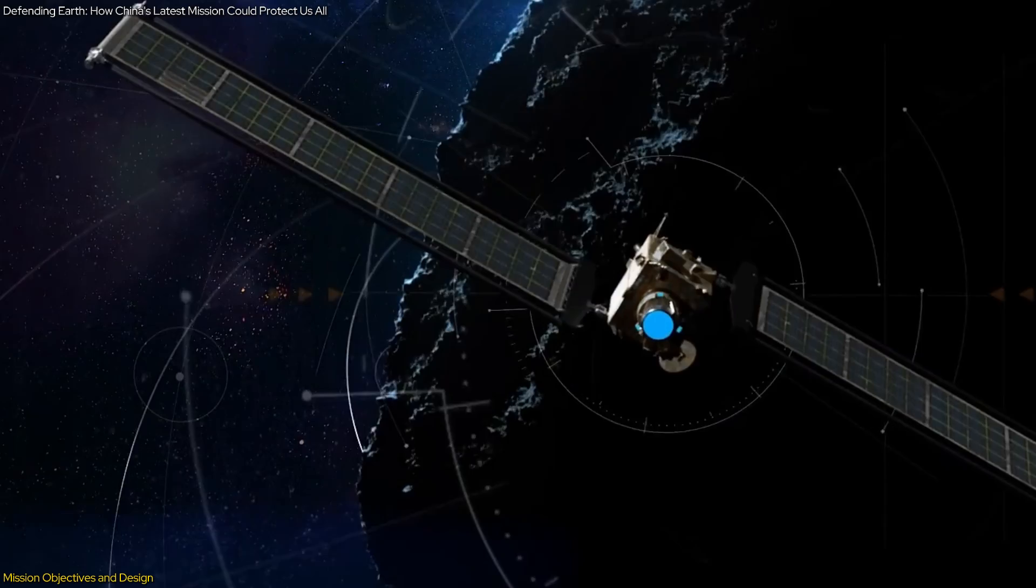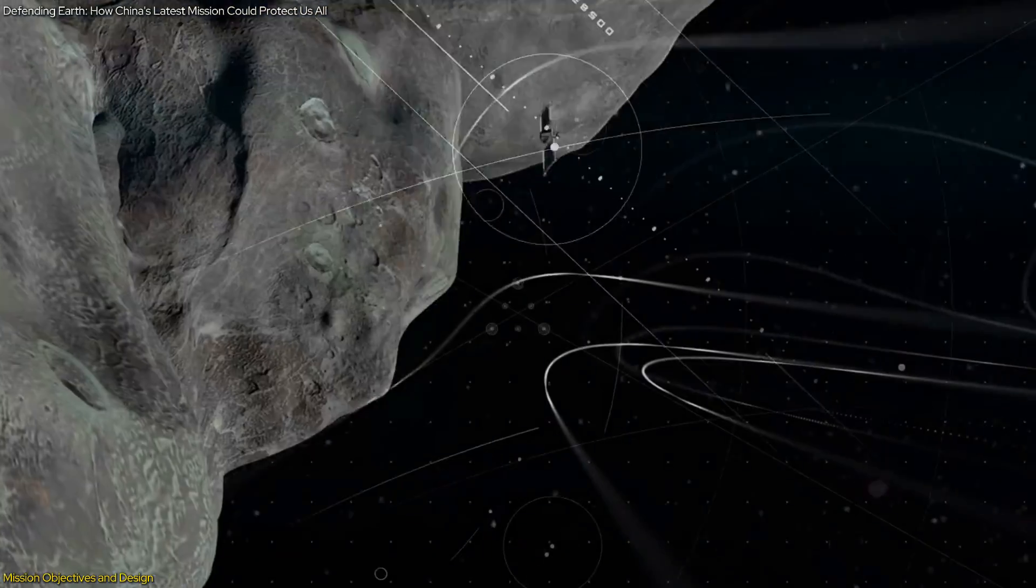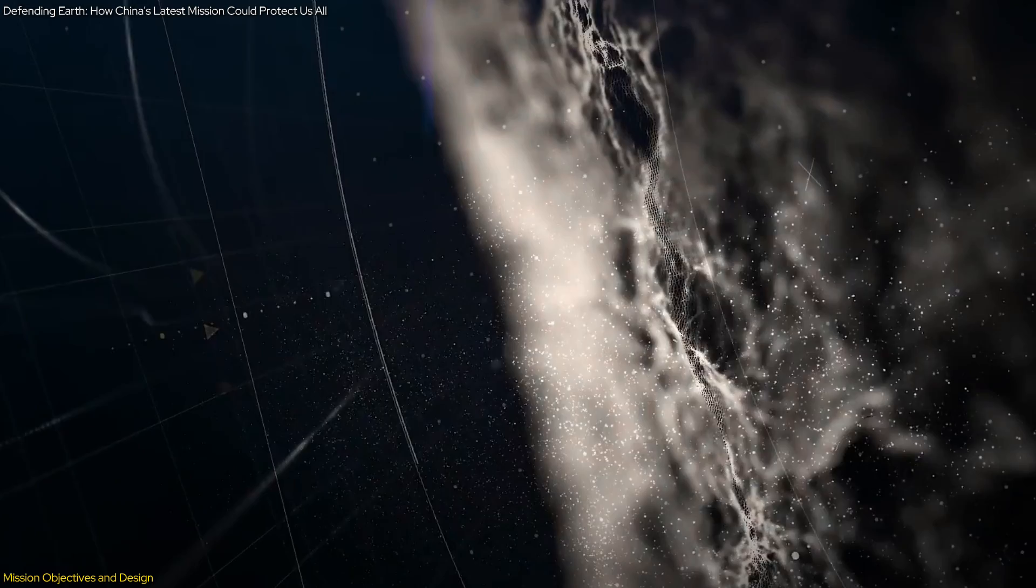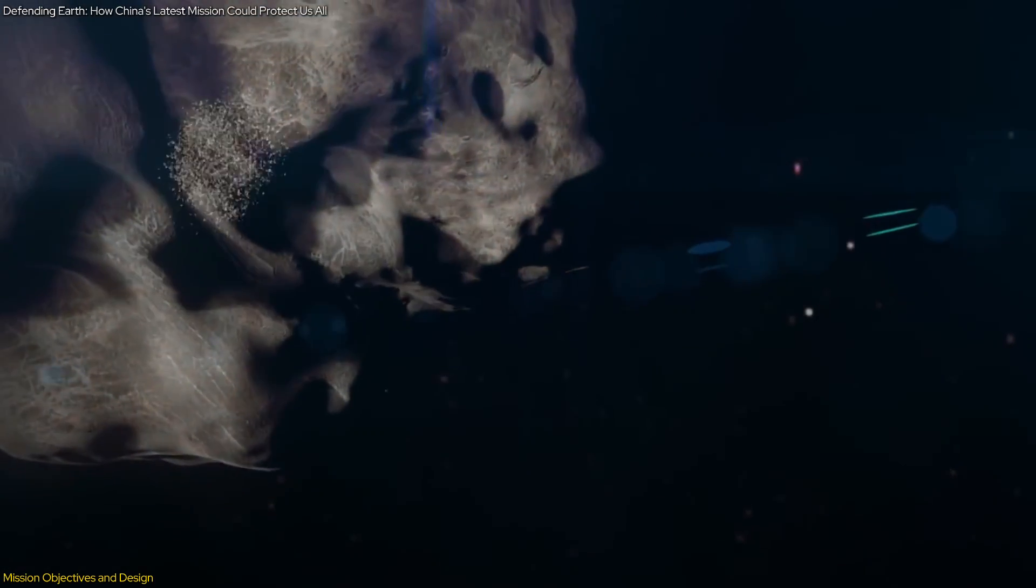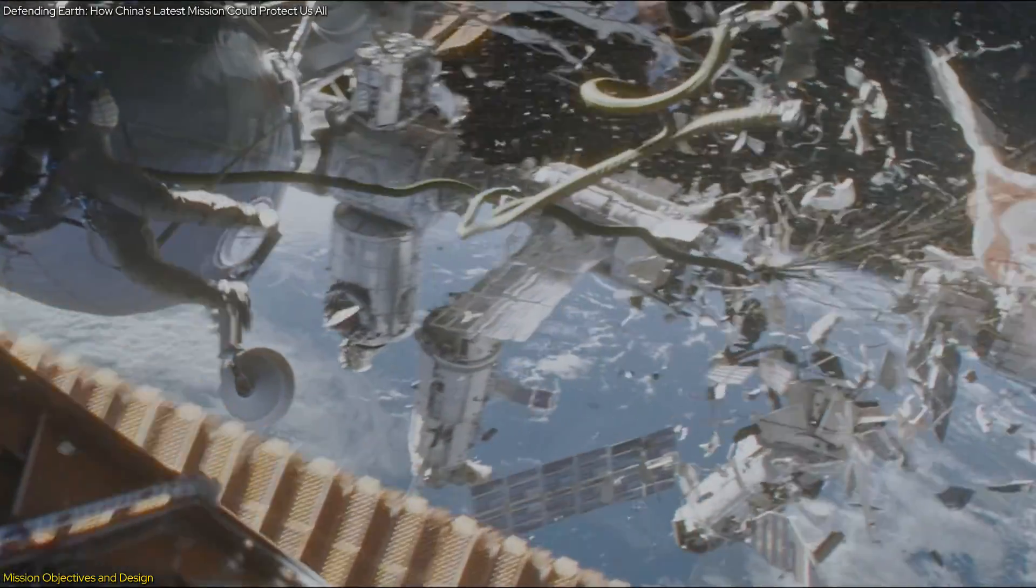The impactor spacecraft will then collide with the asteroid at high speed, aiming to alter its course. The observer spacecraft will monitor the impact and its aftermath for up to a year, assessing the changes in the asteroid's trajectory and gathering data on the resulting debris and surface alterations.